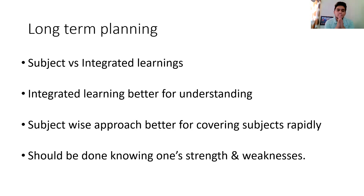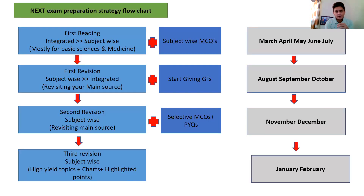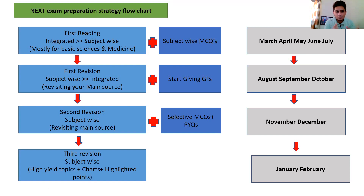Whenever you make a plan, consider your own strengths and weaknesses — know what subjects trouble you most and what your plus and minus points are. For those planning for NEXT 2023, which is supposed to be in March — most of you will have notes from classes and an MCQ bank from applications or physical books. I will make a separate video about sources — what to read and how to read — but here I will explain how to proceed with your preparation.